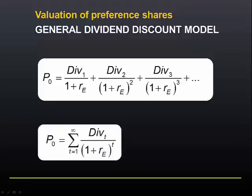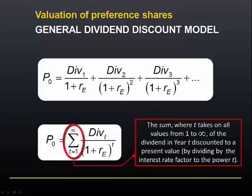We can represent that using this formula. This character is the Greek letter sigma, which stands for the sum of. Therefore, this formula is saying that the value of a share at time 0 is the sum, where t takes on all values from 1 to infinity, of the dividend in year t discounted to a present value by dividing by the interest rate factor to the power t.